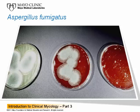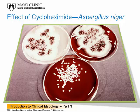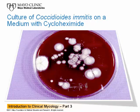This is Aspergillus niger. If a patient had disease caused by Aspergillus niger, we would never recover it on the plate that contains cyclohexamide; the other two plates, which lack cyclohexamide, would grow it. This is Coccidioides — these are colonies of Coccidioides immitis on a culture plate that came from a contaminated specimen. Cyclohexamide allowed those slower growing colonies to grow without being inhibited by rapidly growing mold.